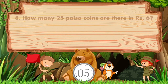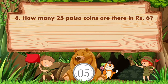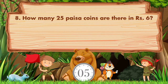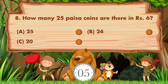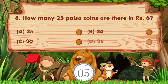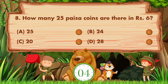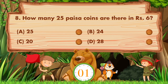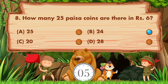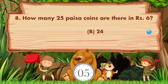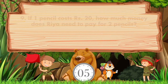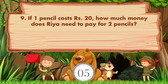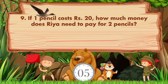How many 25 paisa coins are there in 6 rupees? Option a is 25, option b is 24, option c is 20, option d is 28. The answer is option b: 24. If one pencil costs 20 rupees, how much money does Ria need to pay for two pencils?